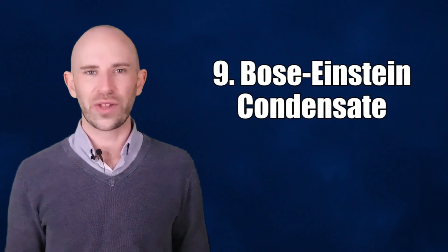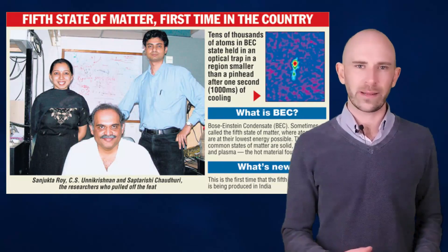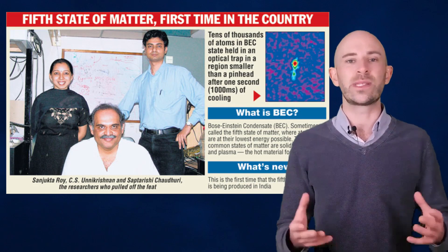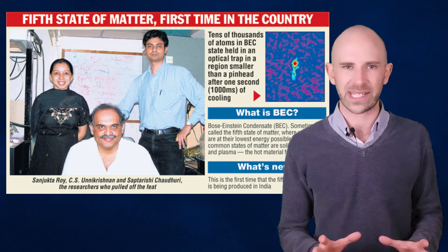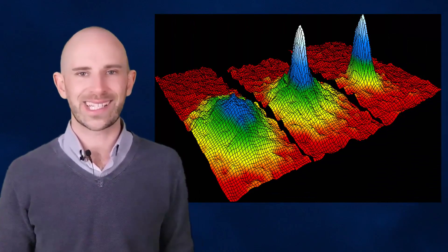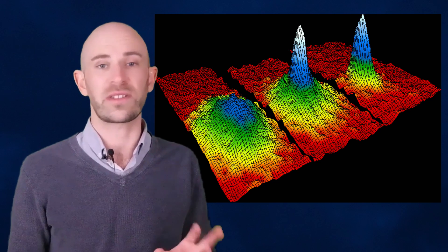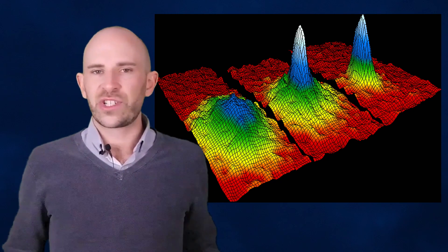Number 9: Bose-Einstein Condensate. Satyendra Bose and Albert Einstein first hypothesized Bose-Einstein Condensate in the 1920s. With dramatically improved facilities and techniques, scientists have now been able to create and observe this completely new form of matter. In simple terms, Bose-Einstein condensates are to extremely cold temperatures what plasma is to extremely hot temperatures.